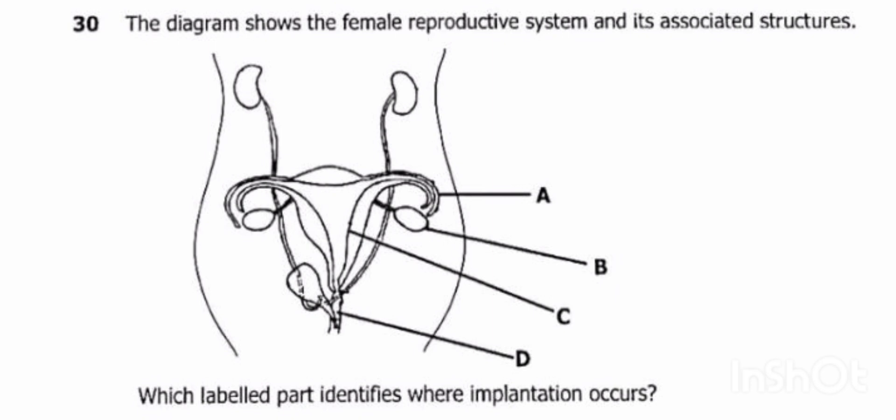They want us to identify the part where implantation occurs. So let's identify the parts: Part A is the fallopian tube, Part B is the ovary, Part C is the uterus, and Part D is the vagina.